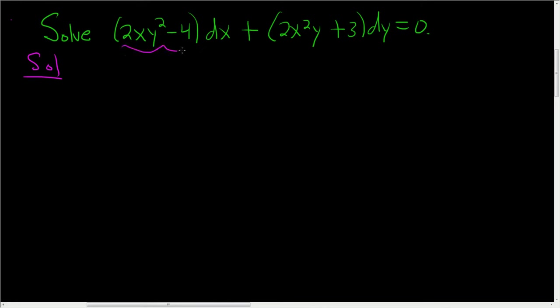So this is M and this is N. To check if it's exact we just compute ∂M/∂y and ∂N/∂x. Easy trick, if there's an x here you put a y here, so ∂M/∂y. That should be 4xy and the derivative of negative 4 is 0.